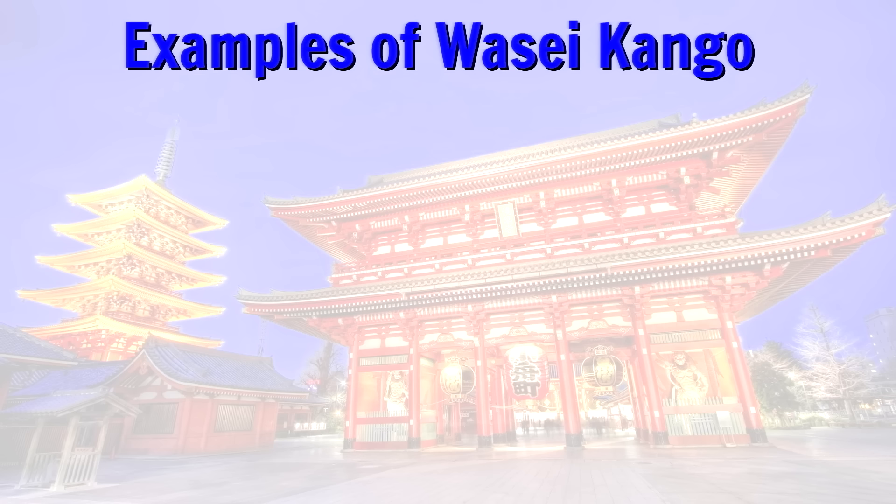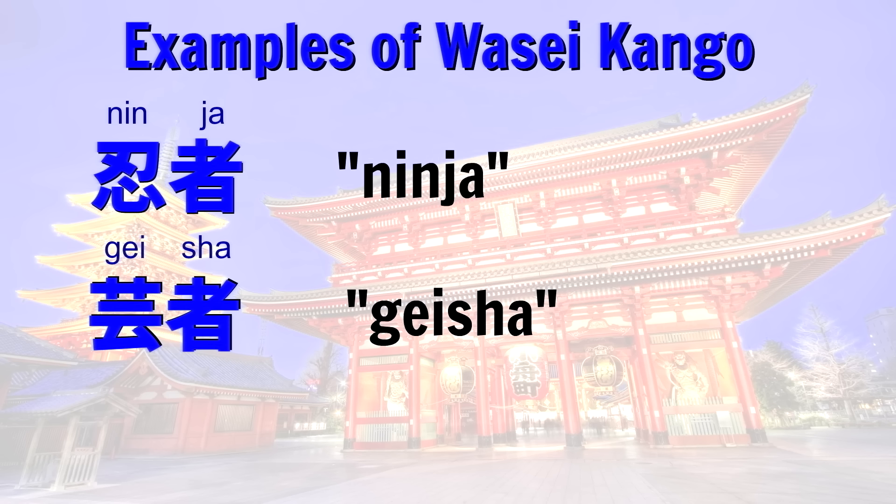Some were created to represent things unique to Japan, like ninja, geisha, and others were created during the Meiji period to represent Western concepts like democracy, Minshu. So even though you might recognize a lot of characters when you look at some text in the other language, they might be used in a very different way, so the meaning will be unclear.